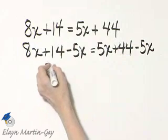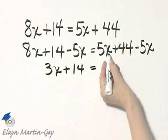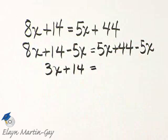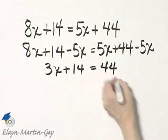8x minus 5x, that's 3x plus 14, is equal to 5x minus 5x, which is 0x or 0 like I wanted, and I have 44.